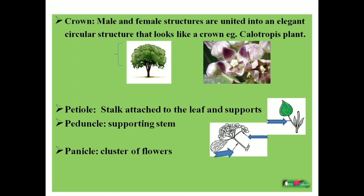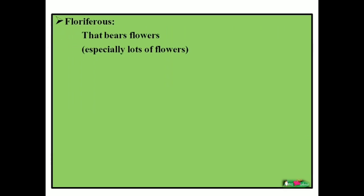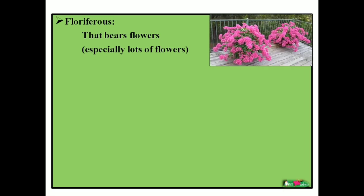Next is panicle — that is a cluster of flowers. The best example is rice flowers, which form a panicle. Then floriferous growth — this refers to any plant bearing lots of flowers. If a plant bears or produces lots of flowers, that is called floriferous growth.